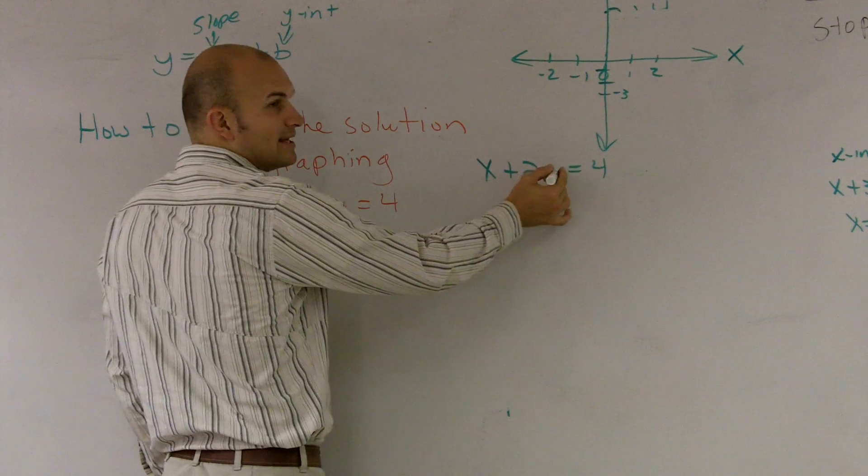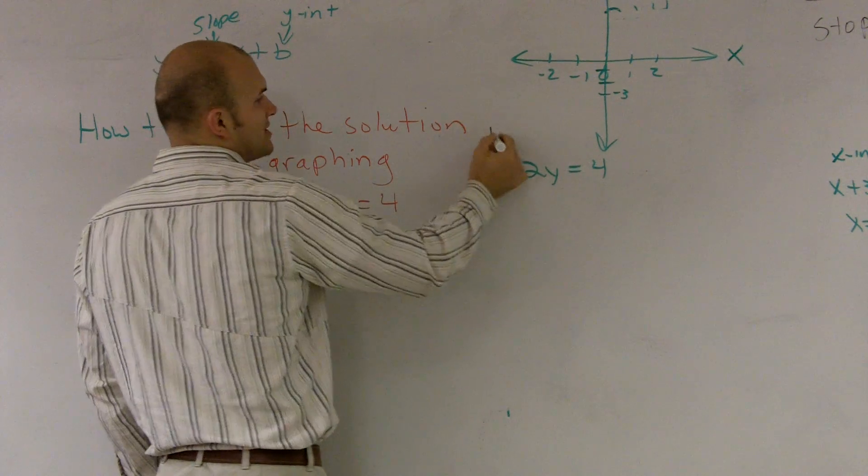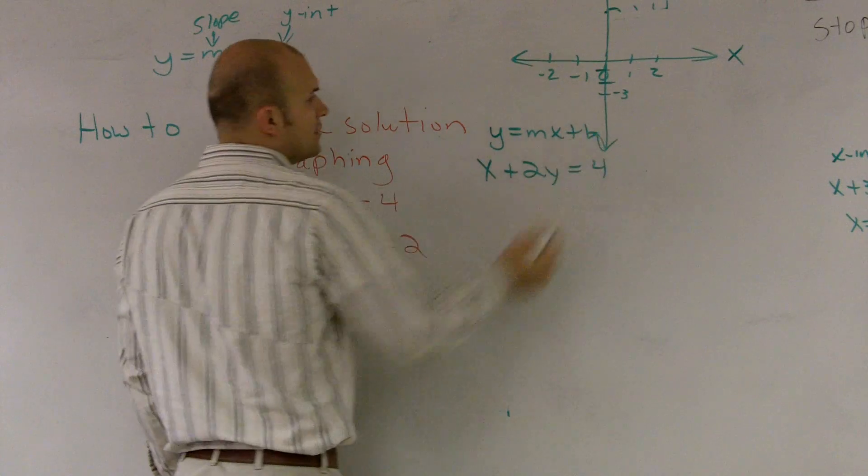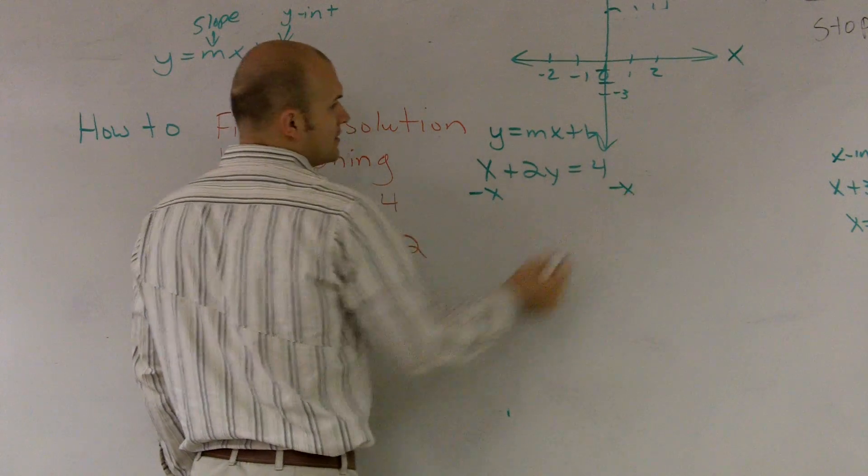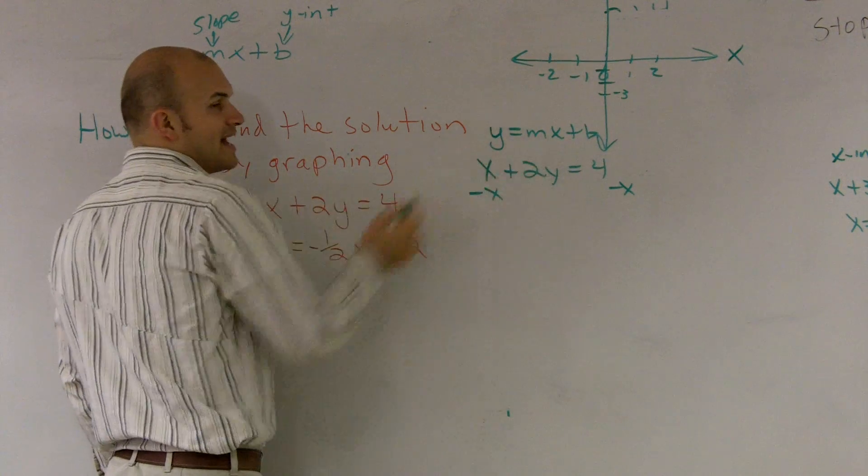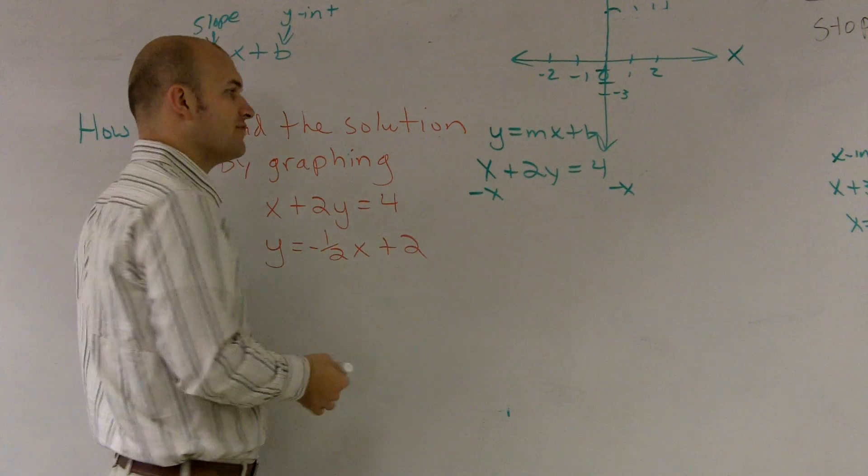So the first thing I'm going to do is I'm going to want to get everything away from my y. Slope intercept form is y equals mx plus b. So therefore, I need to solve for y. So I'm going to subtract the x, because right now I have an x that's added to my y. Remember, you have to undo all your operations to your variable.